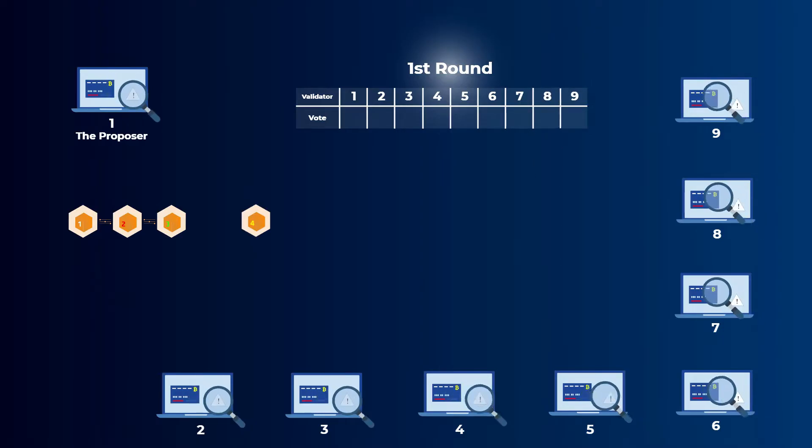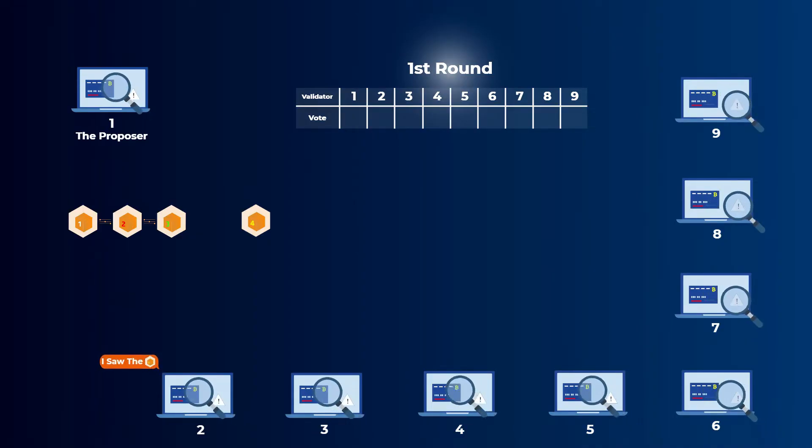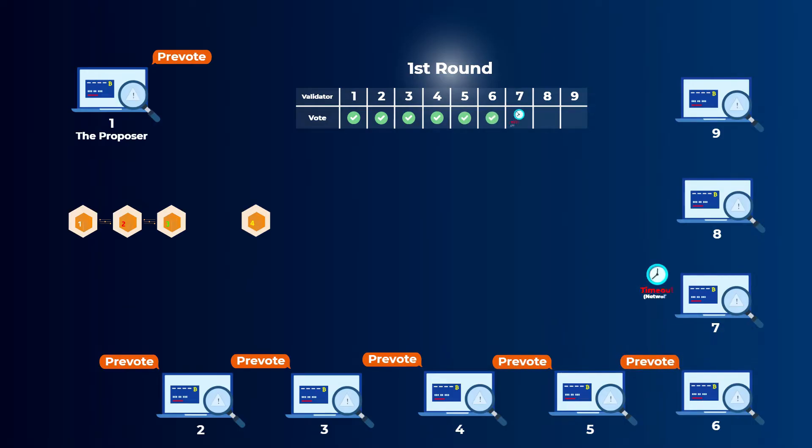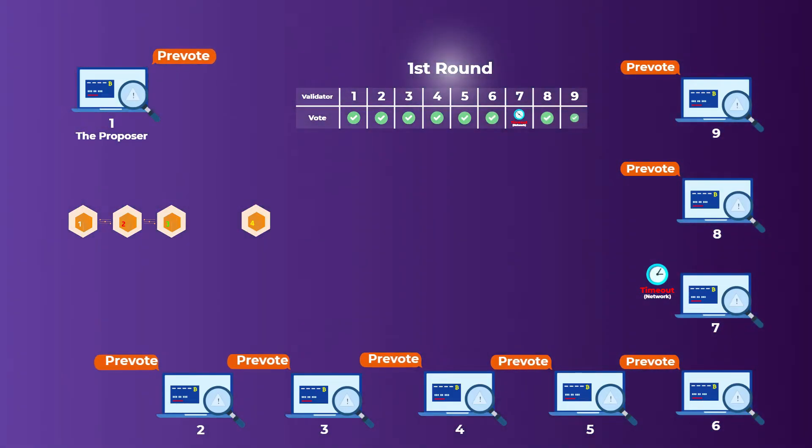Now we have two rounds of voting on the block. First, each validator, including the proposer, have to say if it saw the proposed block and whether it accepts it or not. If a validator saw the block and it is a valid block, then it needs to say provote. If it is an invalid block, or if the validator didn't see it at all, it needs to say provote nil. That was the first round.